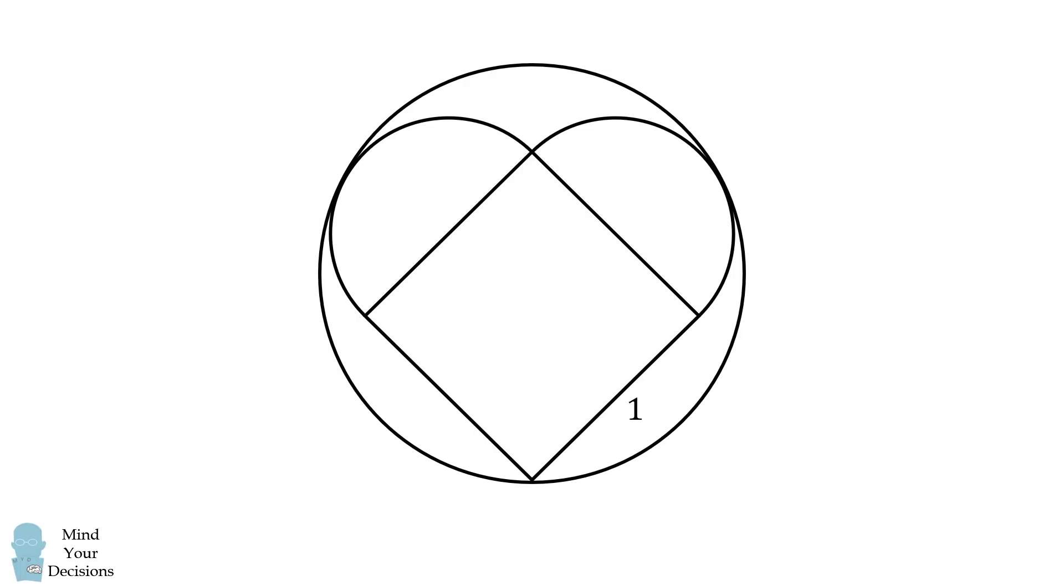Now, let's solve the problem. First, construct the center of the large circle and the center of the semicircle. Construct a line segment between the two centers and the tangent point. Suppose the large circle has a radius equal to r. The semicircle has a radius that's one half the side length of the square, so it will be equal to 0.5.